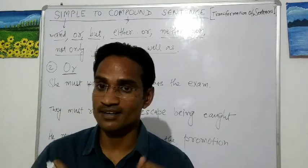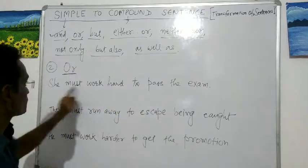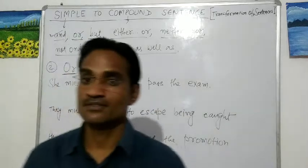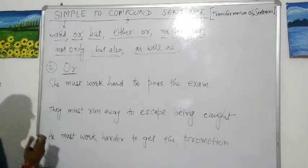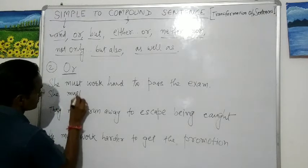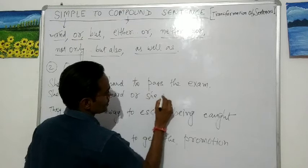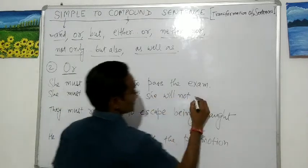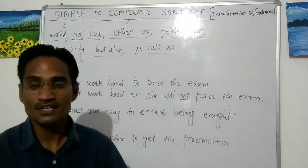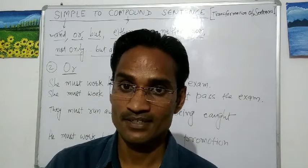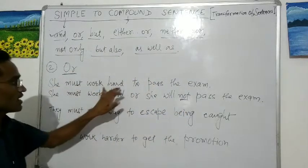We are to change that simple sentence into a compound sentence using 'or.' So: 'She must work hard, otherwise...' becomes 'She must work hard or she will not pass the exam.' Notice why we used 'not' here — 'or' gives the sense of 'otherwise,' meaning the just opposite condition. That's why we use 'not.'